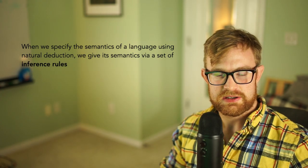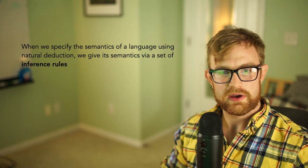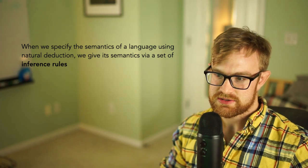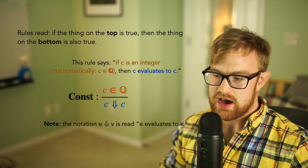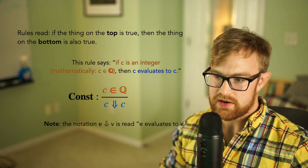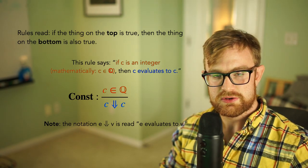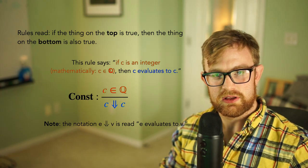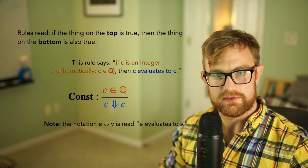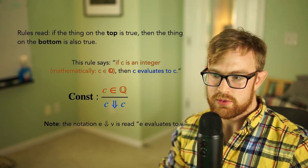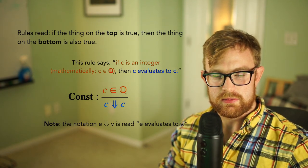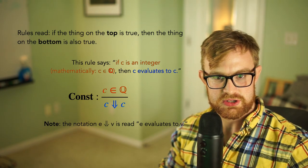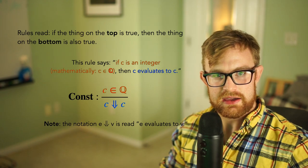To specify the semantics of a programming language using natural deduction, we're going to give a set of what are called inference rules. These inference rules have a top part called the antecedent — the thing above the line — which represents the assumptions. They also have a consequent, the thing below the line, which must be true if the thing above the line is also true. So the rules read top to bottom: if the thing on top is true, then the thing on the bottom must also be true.